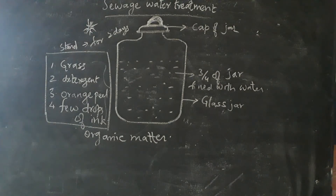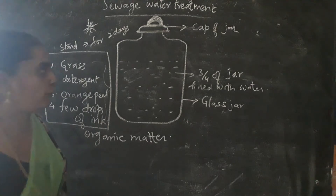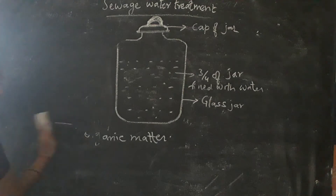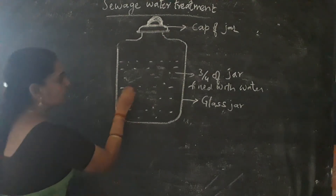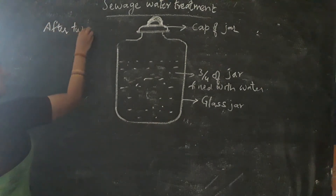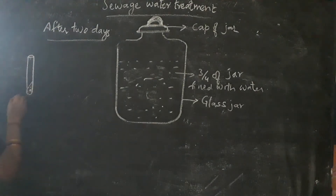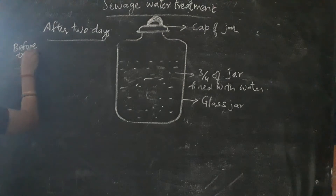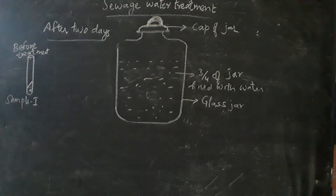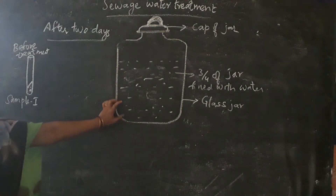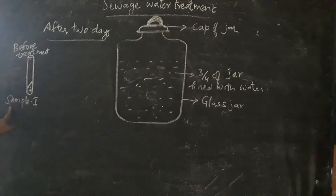After two days, shake the mixture and pour a small sample into a test tube. This is before treatment — Sample 1. After two days, you take a sample of this water into a test tube and mark it as Sample 1, before treatment.